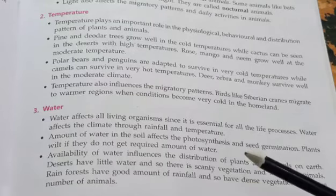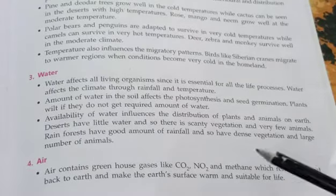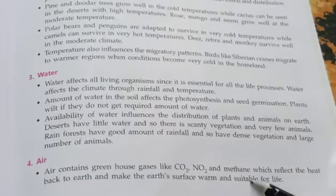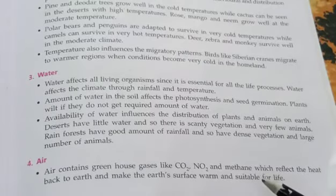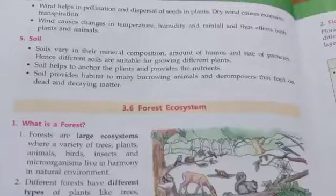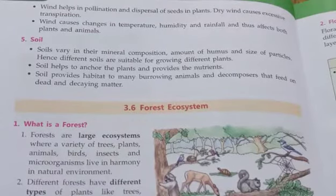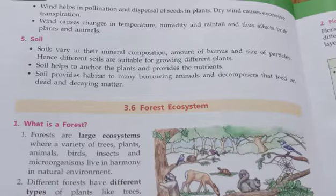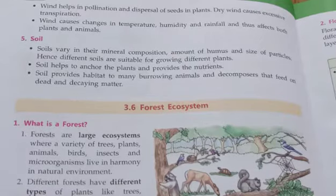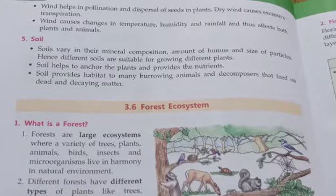Deserts have little water, hence sparse vegetation and very few animals, whereas rainforests have a good amount of rainfall and so have dense vegetation and a large number of animals. Next is air. As we know, air contains greenhouse gases like carbon dioxide, nitrogen, and methane. Wind causes changes in temperature, humidity, and rainfall.